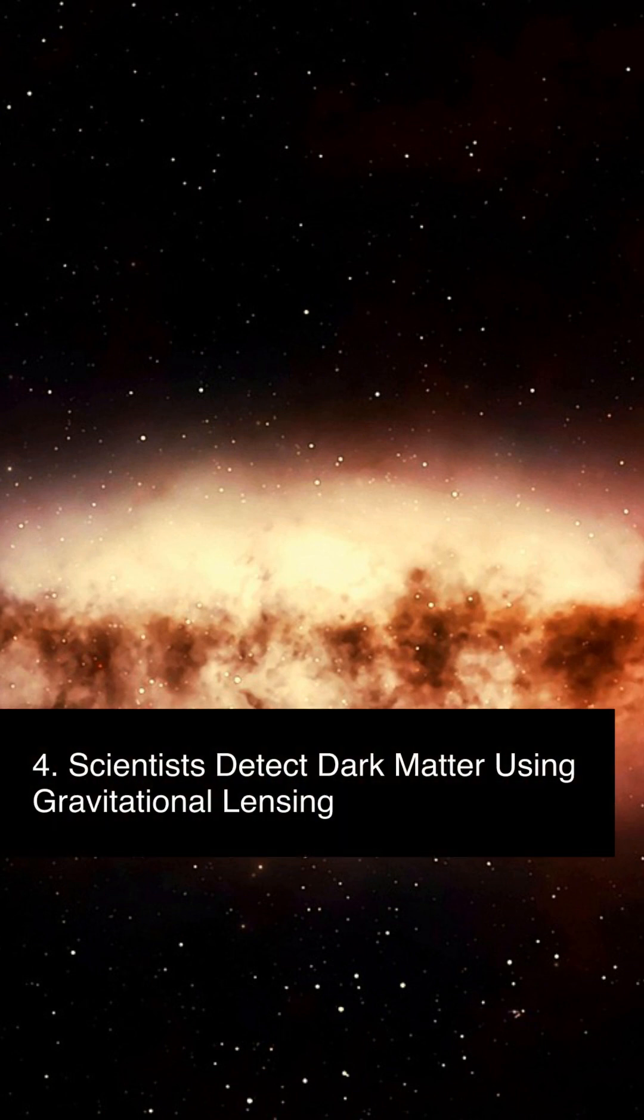By observing how light bends around massive clusters of galaxies, scientists can map out the distribution of dark matter. This technique is called gravitational lensing.